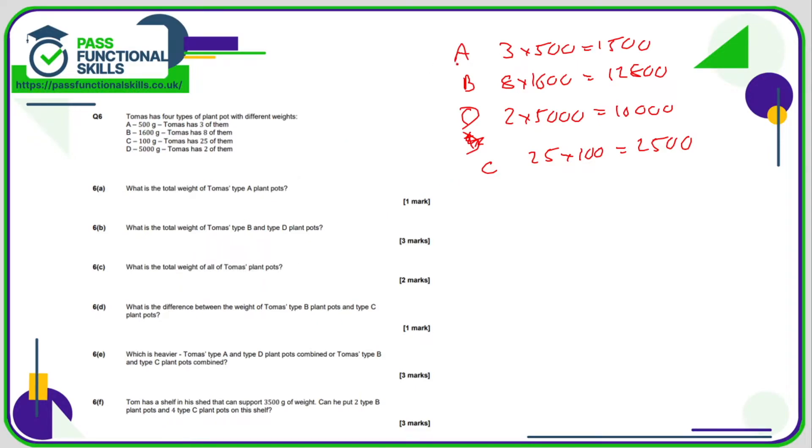So the total weight of plant A, sorry, type A plant pots is 1,500. B and D is going to be 12,800 plus 10,000, which is 22,800. The total weight is all of these weights added together, and that comes to a total of 26,800. The difference between B and C is the difference between 12,800 and 2,500. So 12,800 minus 2,500, so that's a difference of 10,300. What's heavier? A and D combined. Well, A and D combined, that is a total of 10,000 plus 1,500. So that's 11,500, and B and C combined is 12,800 plus 2,500, which is 15,300. So 15,300 is greater than 11,500. So B and C combined is heavier than A and D combined.